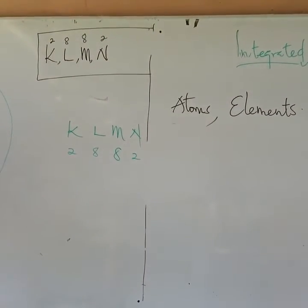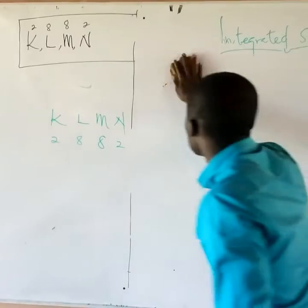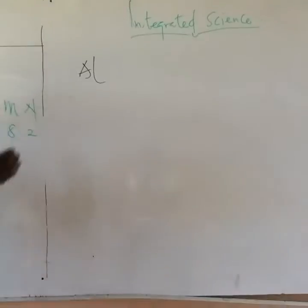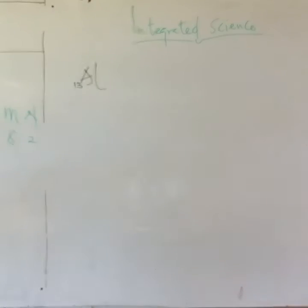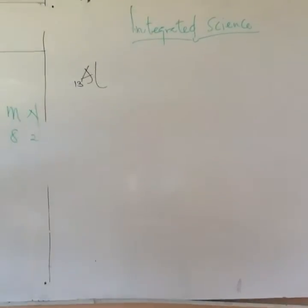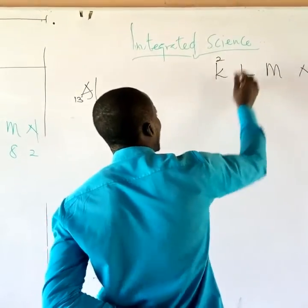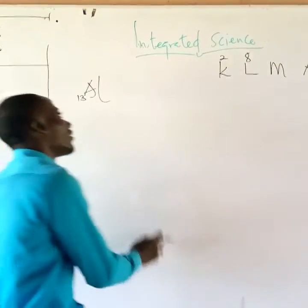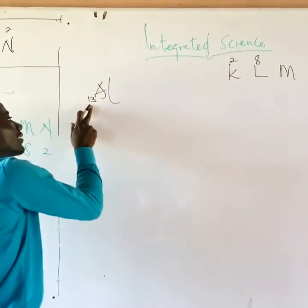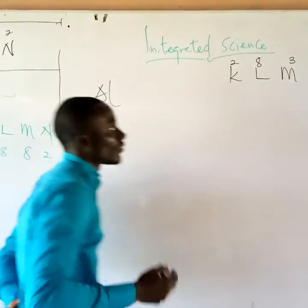This is how you are expected to represent it. Now let's draw another one — aluminum, Al, atomic number 13. So the number of electrons is 13 because it is a neutral atom. Let's arrange it: K, L, M, N. K should take 2, L should take 8. Then 2 plus 8 making 10, minus 13 means we have 3 left, and those 3 will enter M. What will be left for N? Zero. So this will be the representation.